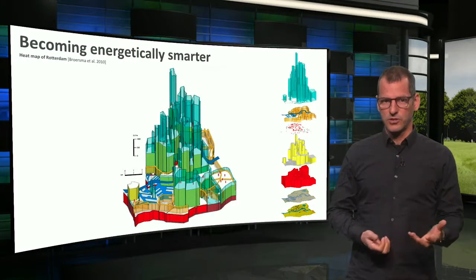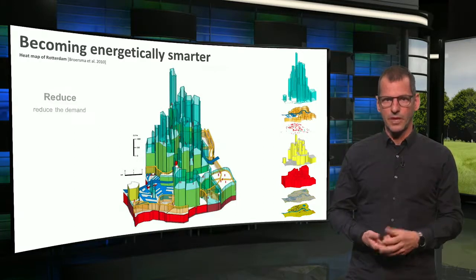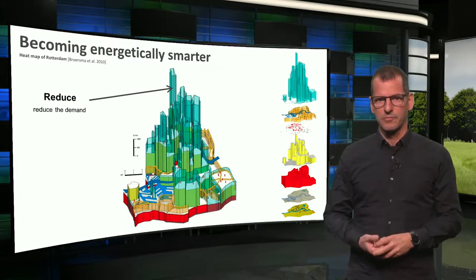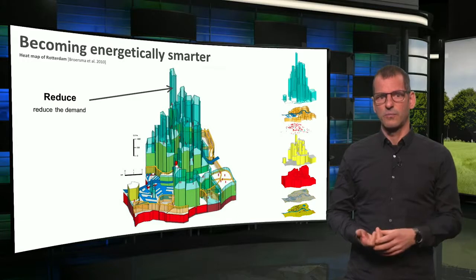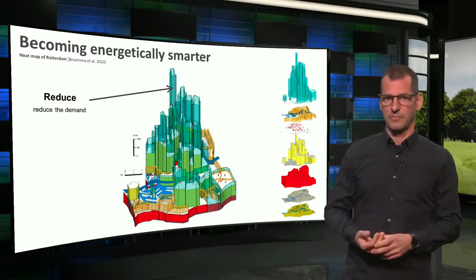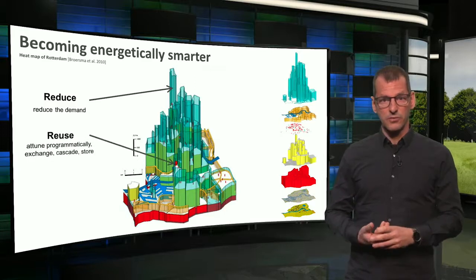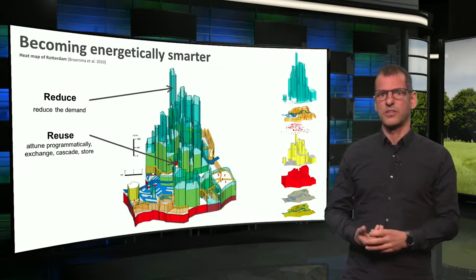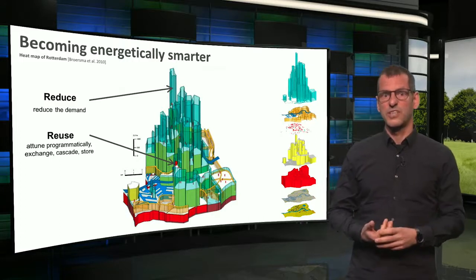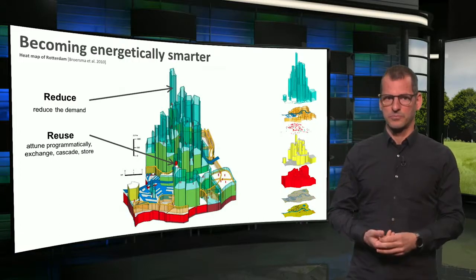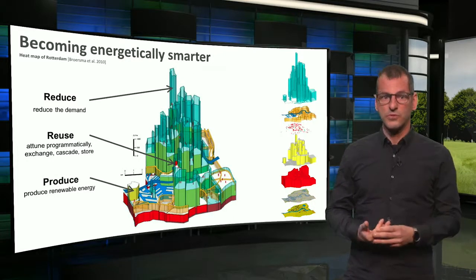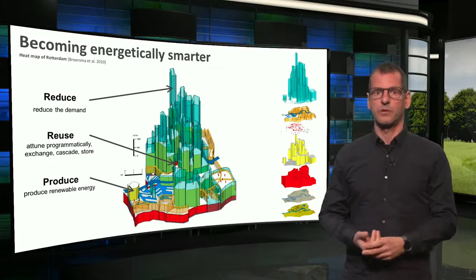We can apply this strategy to the urban scale. Also on the city scale, the demand for energy needs to be reduced. At the moment, here in Rotterdam, the demand is twice as high as the natural potential for heat. The possibility for the reuse step is much more interesting within the city than on the building scale. Sources of waste heat production should be better used. And finally, within the city there are more options to produce energy than just by putting PV on buildings.